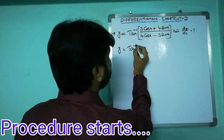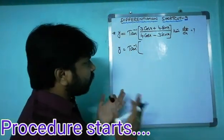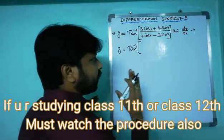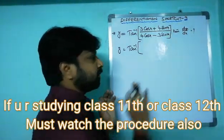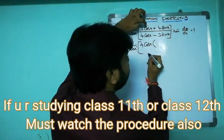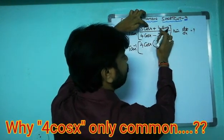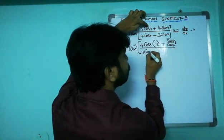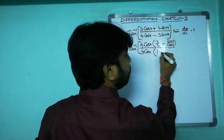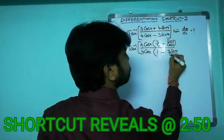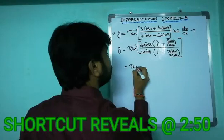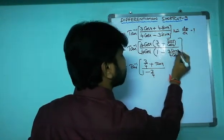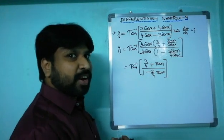y is equal to tan inverse, and we are going to take something as common in the numerator as well as the denominator. I want to take 4cosx as common. If you take 4cosx common in the numerator, you get 3/4 plus sinx/cosx. Similarly in the denominator, 4cosx is common, giving 1 minus (3sinx)/(4cosx). The 4cosx terms cancel, leaving tan inverse of (3/4 + tanx) / (1 - (3/4)tanx).